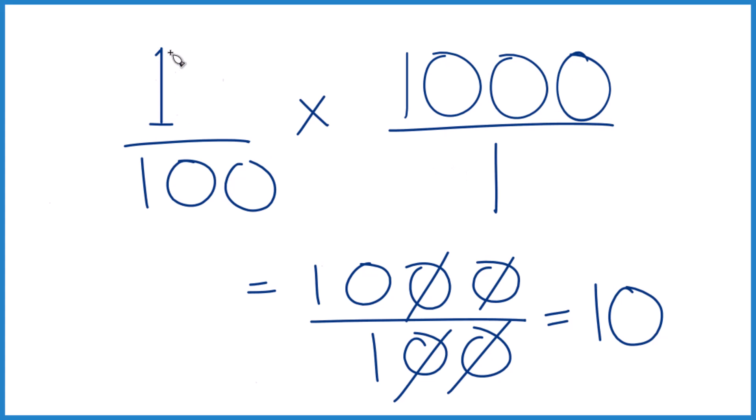The other way you could do it is divide 1 by 100. You get 0.01. Multiply that by 1,000. That would give you 10 as well.